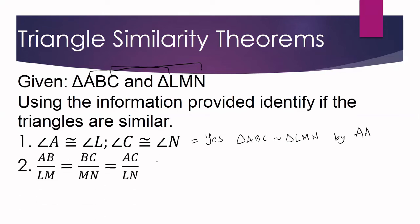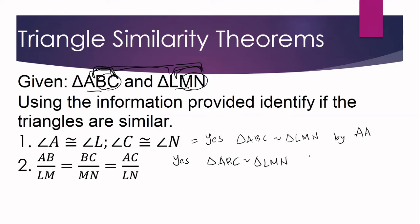For number two: the ratio of AB to LM, BC to MN, and AC to LN are all given as equal. AB and LM are corresponding sides, BC and MN are corresponding sides, and AC and LN are corresponding sides — so all three pairs are proportional. Therefore, triangle ABC is similar to triangle LMN by SSS similarity theorem.